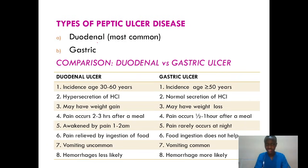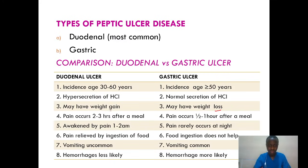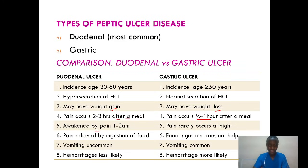For duodenal ulcer, there is hypersecretion of HCL, but for gastric ulcer, there's always normal secretion of HCL. For patients with duodenal ulcer, they may have weight gain, while for gastric ulcer, they might have weight loss. Pain occurs two to three hours after a meal for duodenal ulcer, but one to two hours after a meal for gastric ulcer. Patients with duodenal ulcer are always awakened by pain, mainly at night, but for gastric ulcer, pain rarely occurs at night.